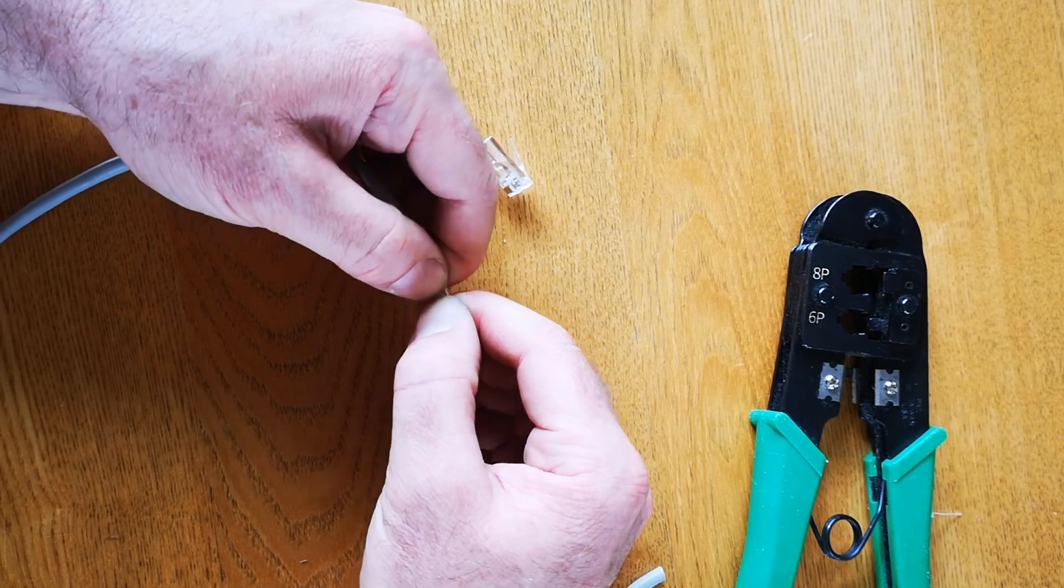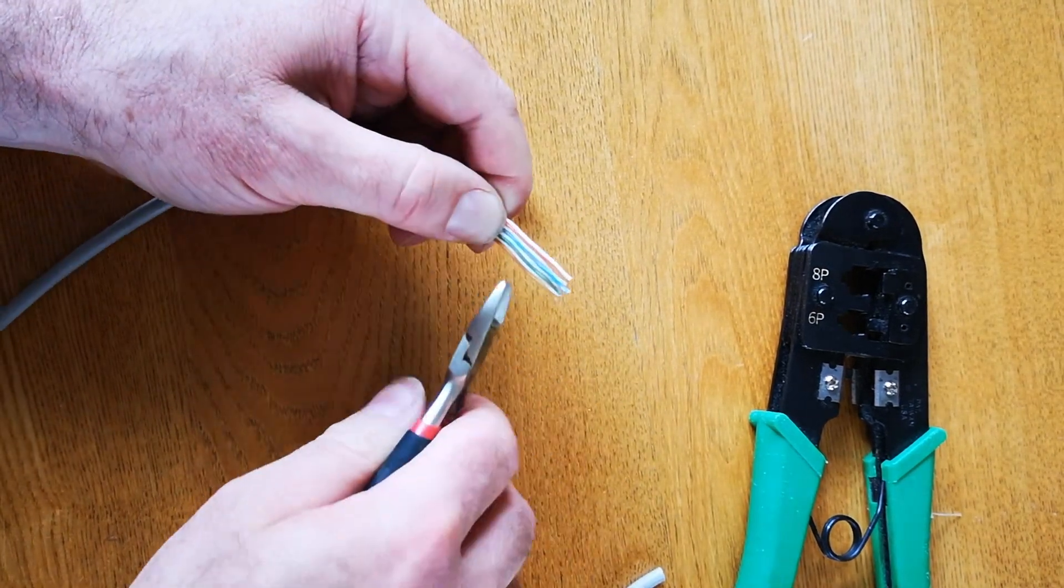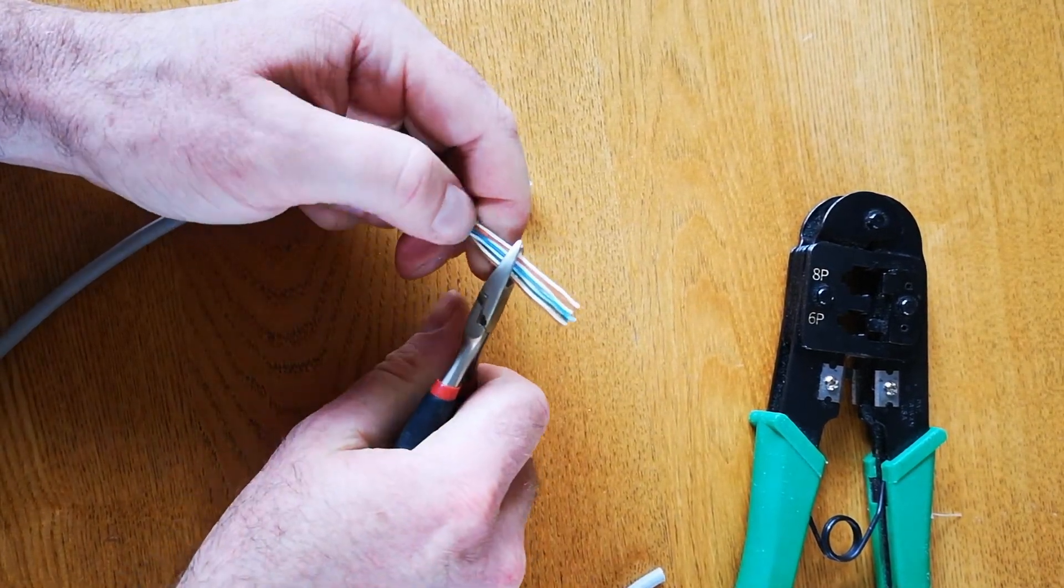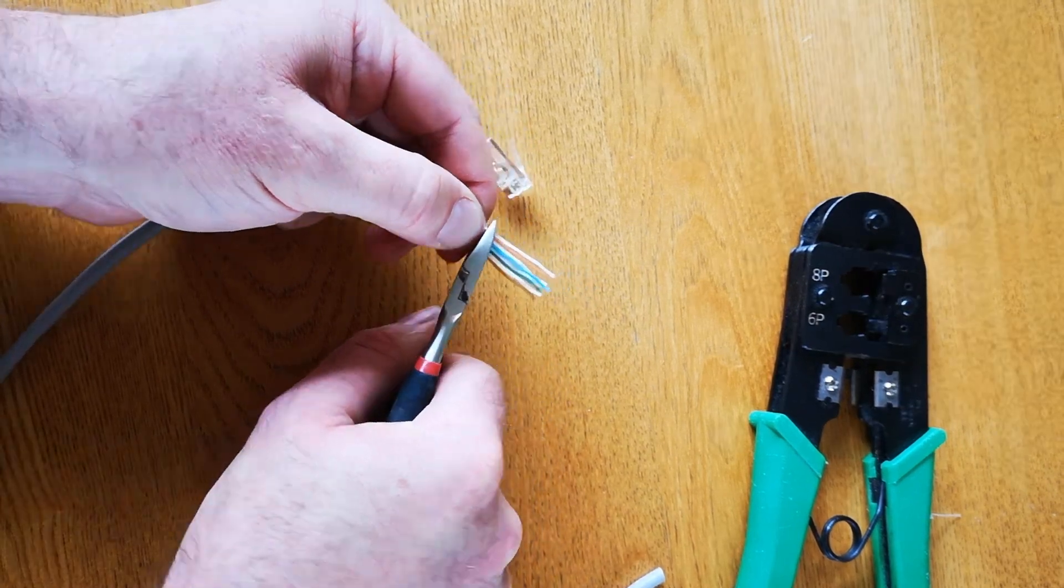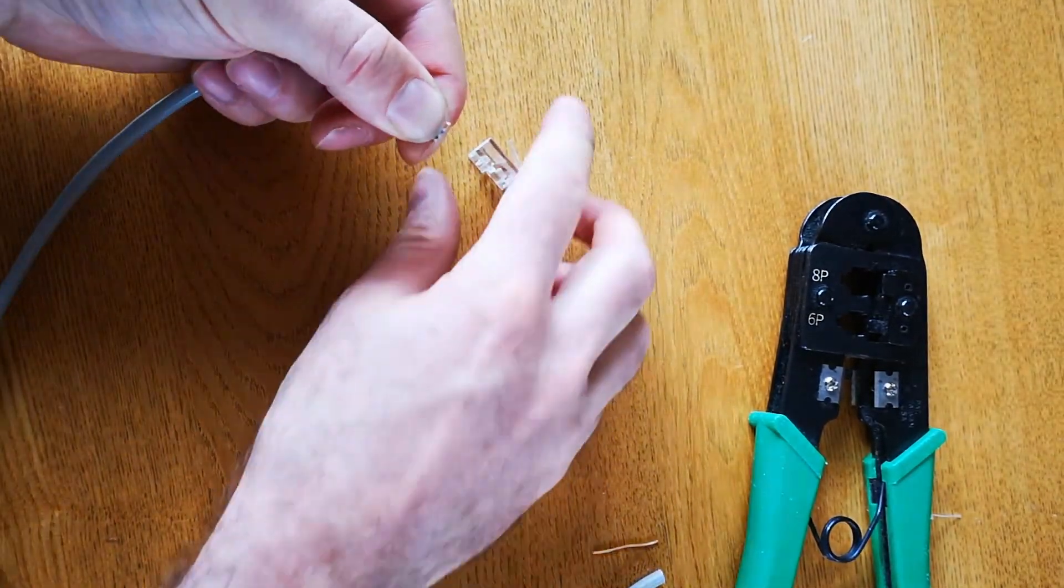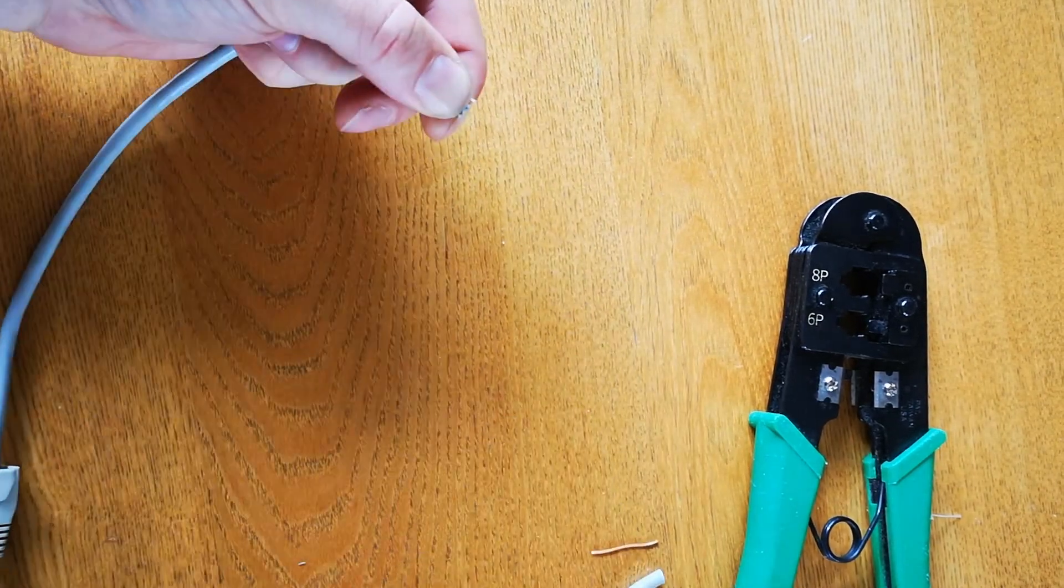And if I just switch hands because I'm right handed, take my side cutters and I'm going to cut them off straight across like that. And then hold them so they don't change position or get out of alignment.